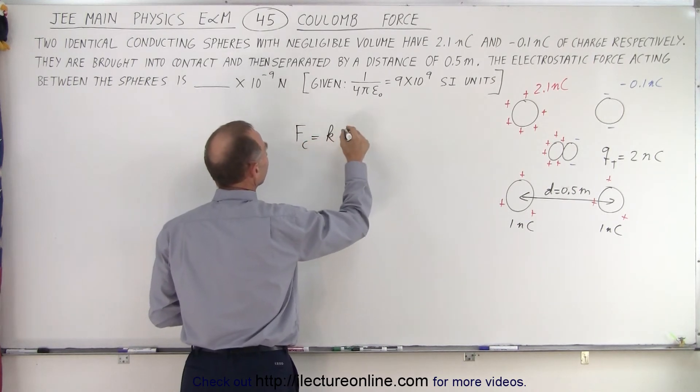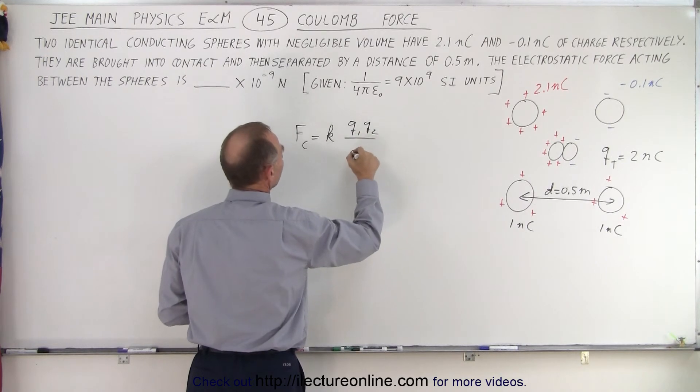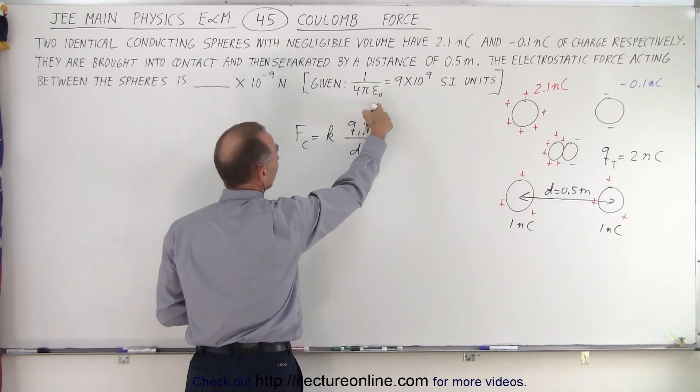Now we know that the Coulomb force is equal to k times q1 q2 divided by the distance squared.